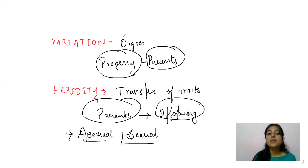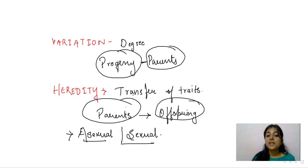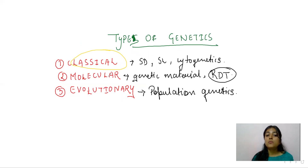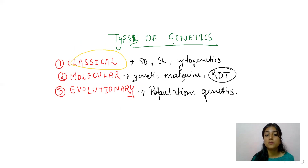Variation is defined as the degree by which the progeny differs from its parents. Heredity is defined as the transfer of characters or traits from parents to offspring, shown by both types of reproduction — asexual as well as sexual. The three types of genetics are classical, molecular, and evolutionary. Classical deals with Mendel's principles, sex determination, sex linkage, and cytogenetics. Molecular deals with the study of genetic material, its structure, replication, and expression, as well as recombinant DNA technologies.